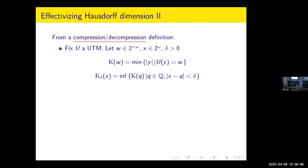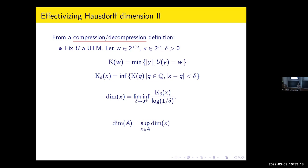Given that Kolmogorov complexity at precision delta, you can define the effective dimension of a point — it's taking the information ratio: the Kolmogorov complexity over the size of delta. You can do this for sets by taking the supremum. This gives a definition that is fully equivalent to the one using S-gales. These are the main ways of effectivizing fractal dimensions.